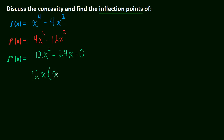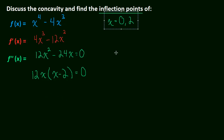Factoring gives us 12x times (x minus 2) equals zero, which is pretty easy to solve. This gives us x equals 0 or x equals 2 — that's when the second derivative is equal to zero, and when the second derivative equals zero, that's called an inflection point. It's also a critical number of the first derivative, because the second derivative being equal to zero means the slope of the first derivative is zero — horizontal.